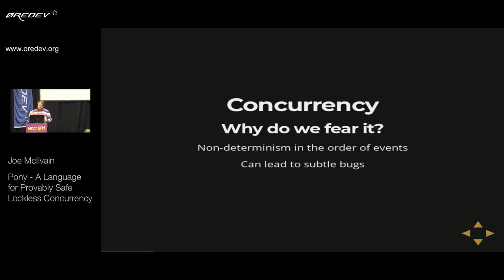But if I ask you to deposit the paycheck and pay the rent, the order in which you do these things may matter quite a lot depending on how much money is in our checking account. So the order non-determinism of concurrency can lead to subtle bugs that are difficult to reason about, reproduce, and test for. One really common example is a data race, where one or more tasks access the same data in an undefined order, where some of those order possibilities lead to incorrect behavior.